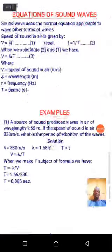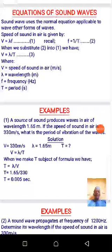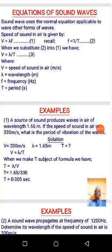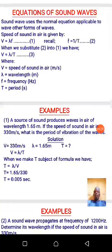Sound waves use the normal equations applicable to other waves. Whenever sound is traveling in air, the speed of such sound can be determined using v equals lambda f, where v is the speed at which the sound is traveling, lambda is the wavelength, and f is the frequency. Frequency is the inverse of period, so f equals one over T.